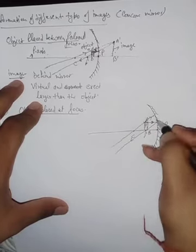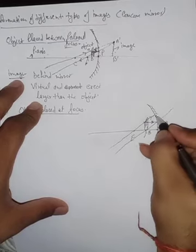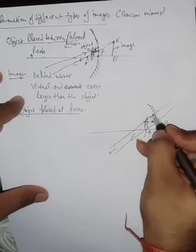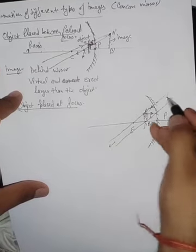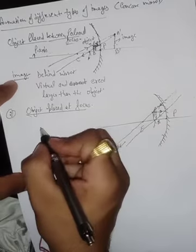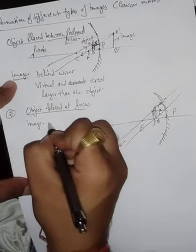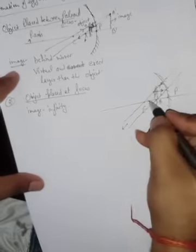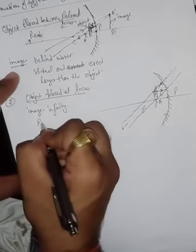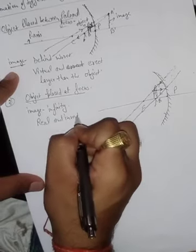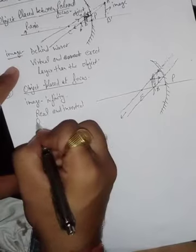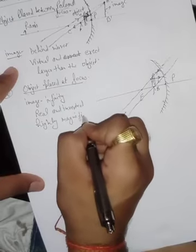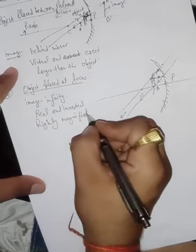The light rays keep going in this direction. If we extend them behind the mirror they don't intersect, and in front they also don't intersect. So the image is neither behind the mirror nor in front — the image is formed at infinity. The image is real and inverted, and it is highly magnified or highly enlarged.